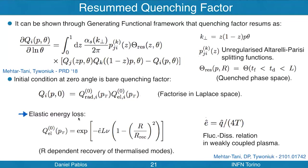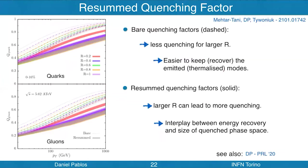The initial condition at zero angle is the bare quenching factor — the quenching factor of a single charge — which has contributions from both radiative energy loss and elastic energy loss. These factorize in Laplace space. The elastic energy loss is modeled through the ê parameter, which is related to Q̂ in a weakly coupled plasma through the fluctuation-dissipation relation, and also contains a recovery modulation due to the angular distribution of the thermalized modes.